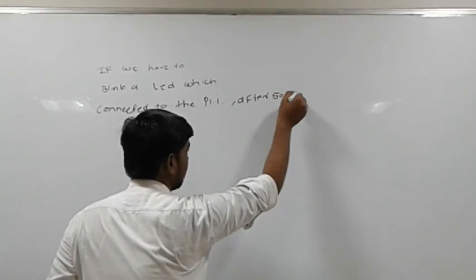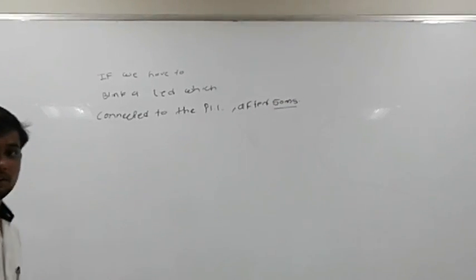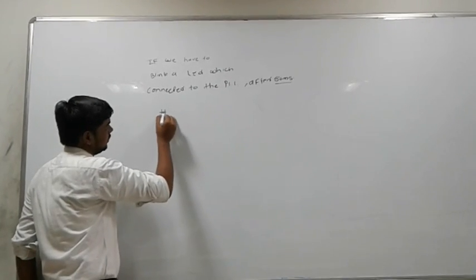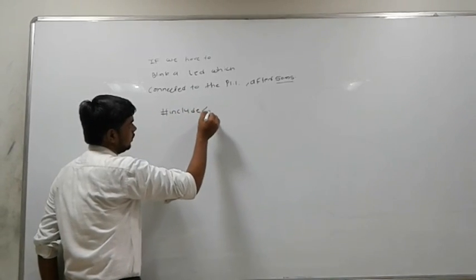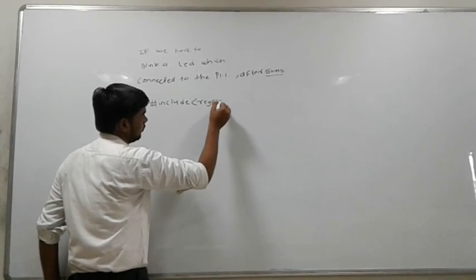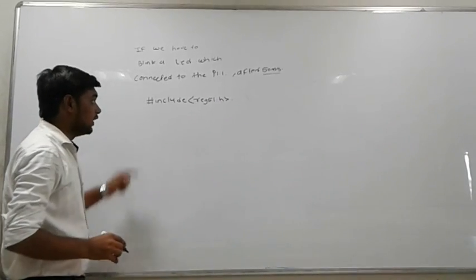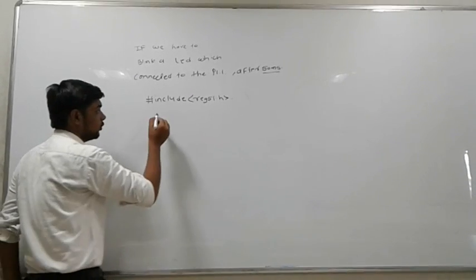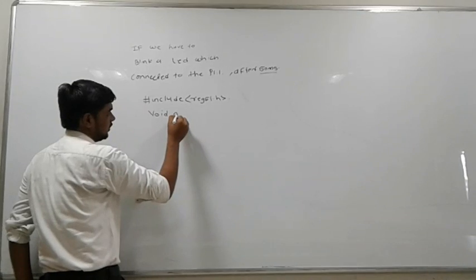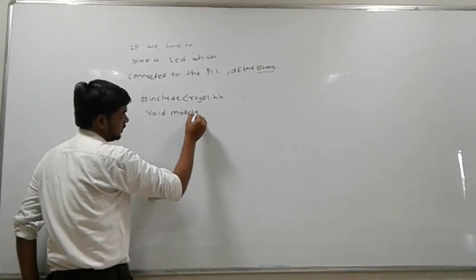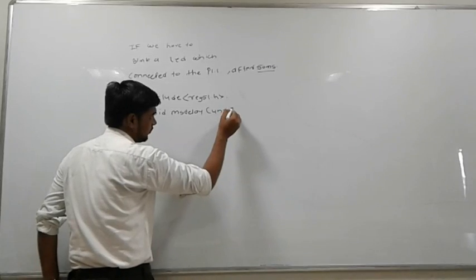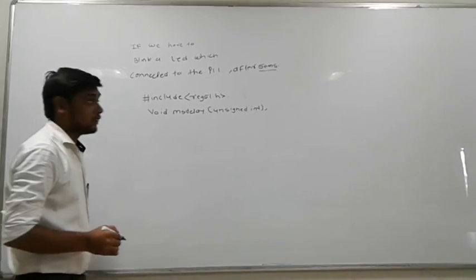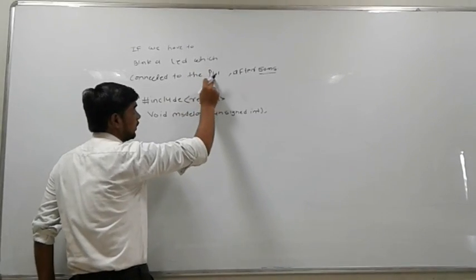After the 15 millisecond delay, start with hash include register 51 dot h. Then record this is the 50 millisecond delay, so introduce here void ms delay unsigned integer, then semicolon.